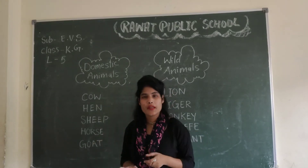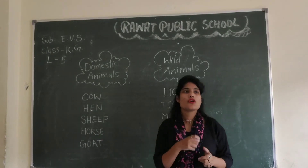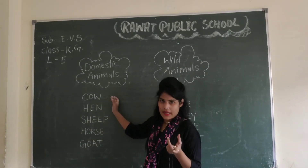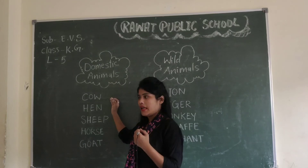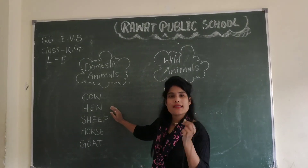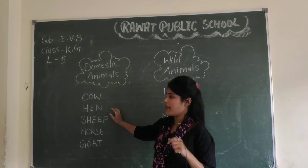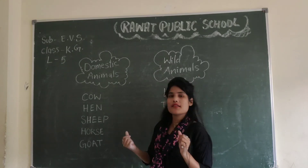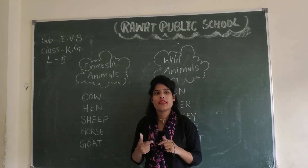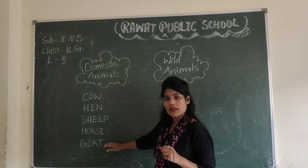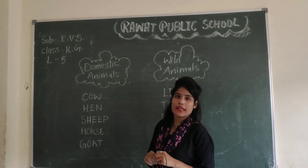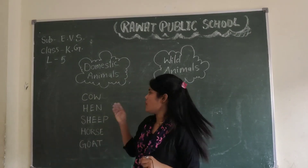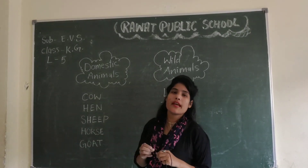Domestic animals like cow give us milk. We can also get eggs from hen. Sheep gives us wool — sheep ke baal se hume wool milta hai. Horse and goat also give us milk.